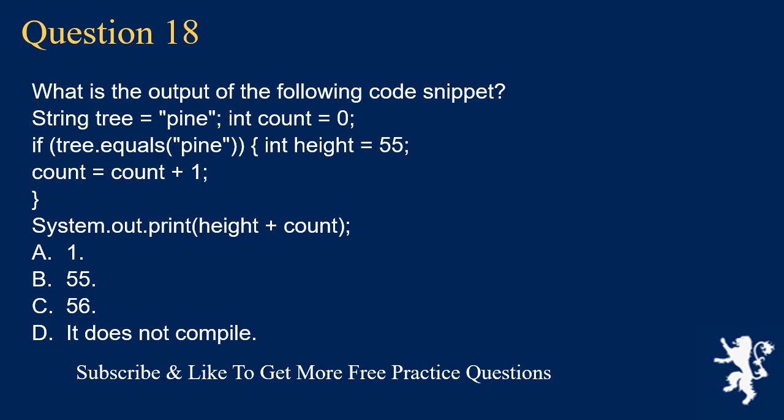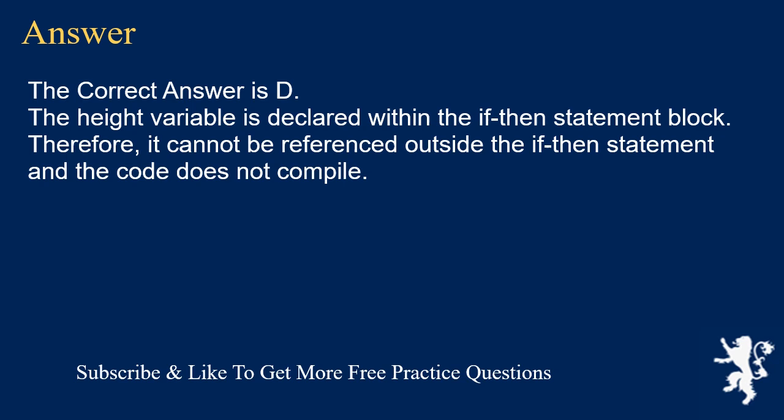Question 18: What is the output of the following code snippet? String tree = "pine"; int count = 0; if (tree.equals("pine")) { int height = 55; count = count + 1; } System.out.print(height + count). Options: A) 1, B) 55, C) 56, D) does not compile. The correct answer is D. The height variable is declared within the if-then statement block, therefore it cannot be referenced outside the if-then statement and the code does not compile.